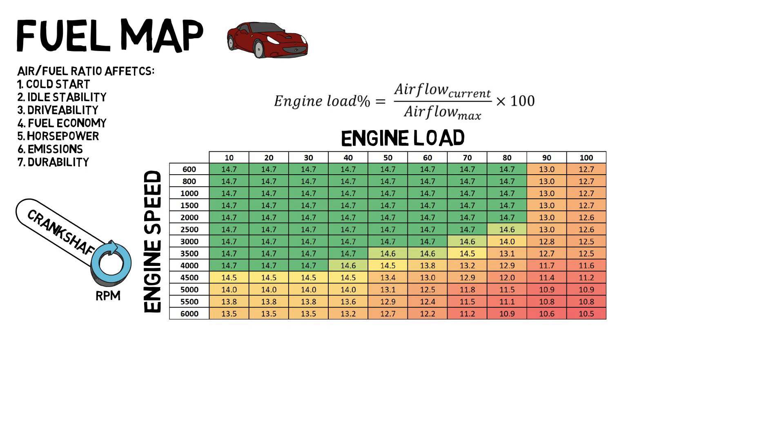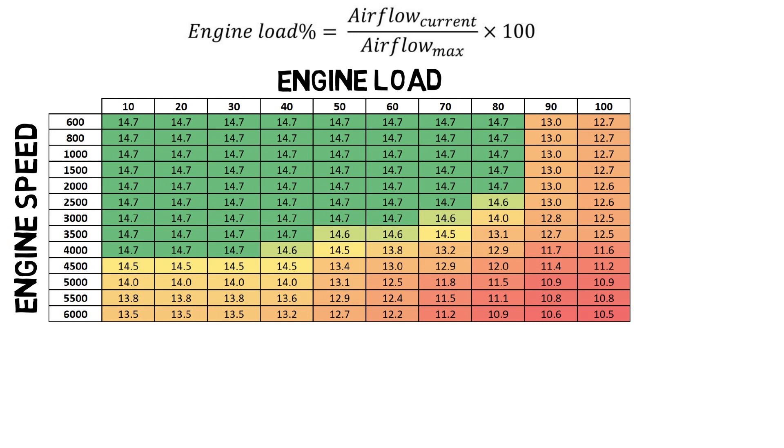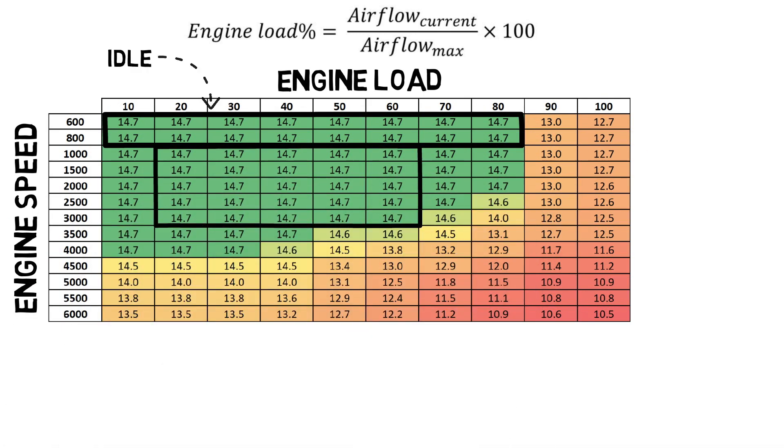To understand how the fuel maps are selected, it will be easier if we split the table into multiple sections. Let's call them idle, cruise, and wide open throttle, or WOT.